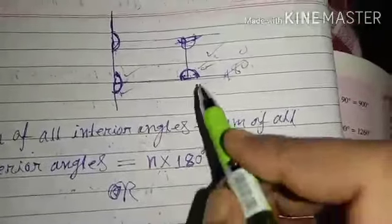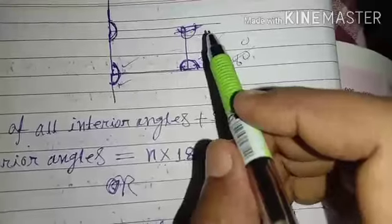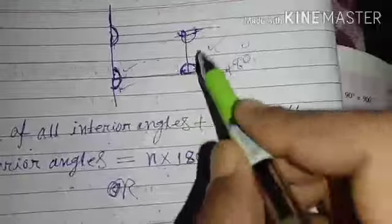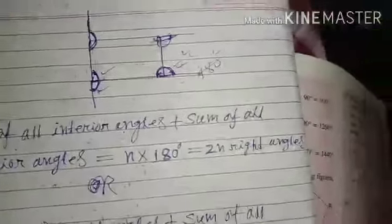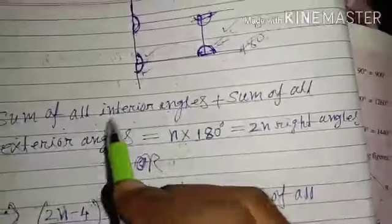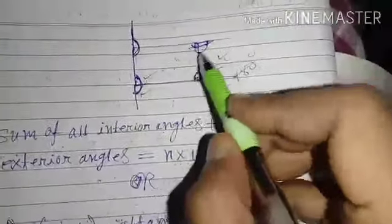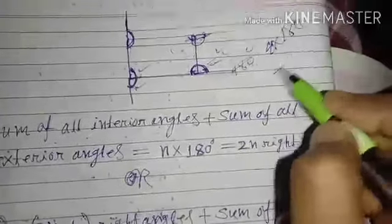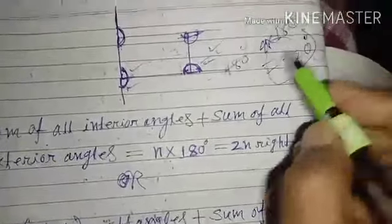We have 5 sides, we have a polygon. We have 5 sides. For a 4-sided polygon, interior plus exterior equals 4 into 180, which means 720.